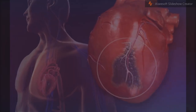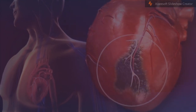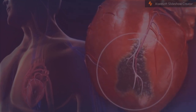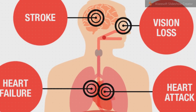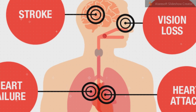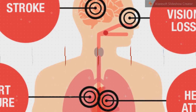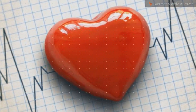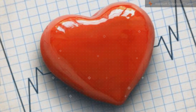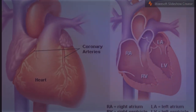The complete blockage of a coronary artery caused by a rupture of an atherosclerotic plaque is usually the underlying mechanism of an MI. MIs are less commonly caused by coronary artery spasms, which may be due to cocaine, significant emotional stress, and extreme cold, among others.